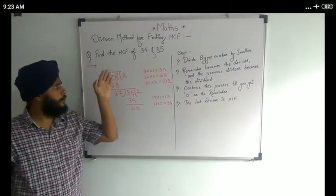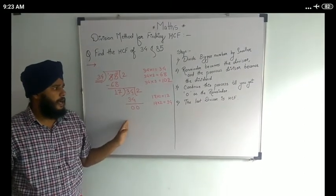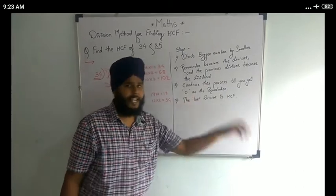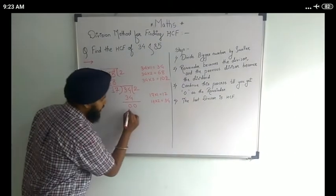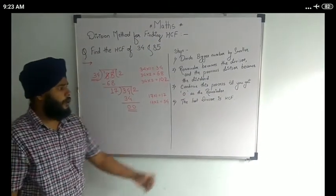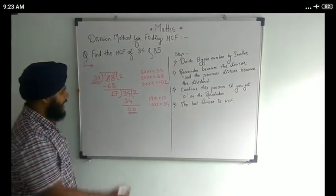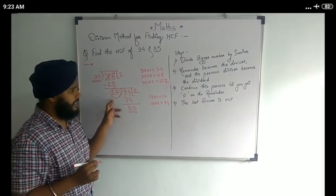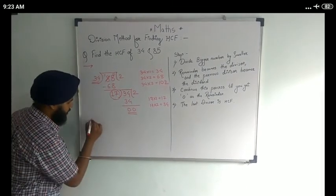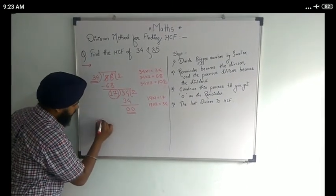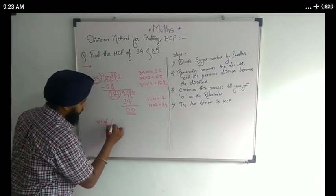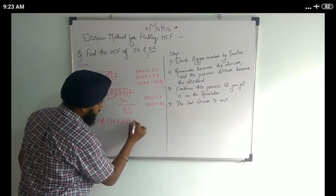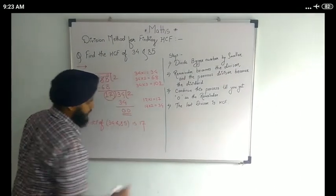Our remainder is 0. The third step is: we are going to continue this division until we get 0. We got 0 here. So the last divisor is 17. The last divisor is the HCF of these numbers. Therefore, the HCF of 34 and 85 is 17.